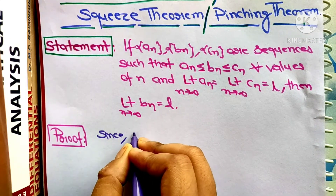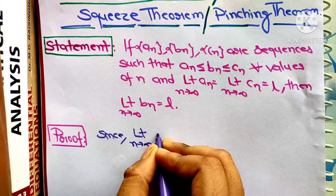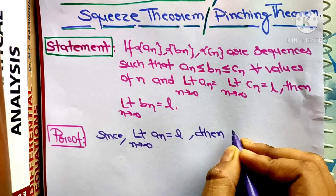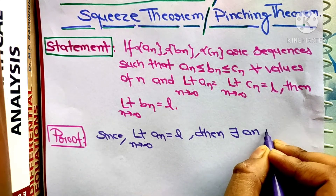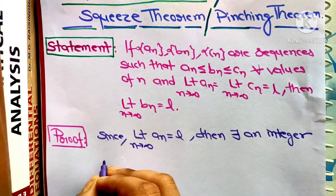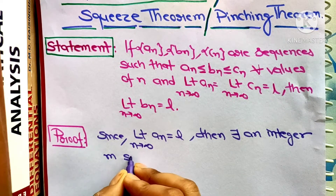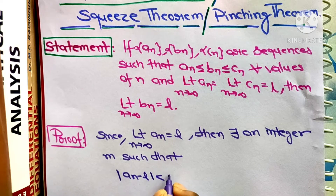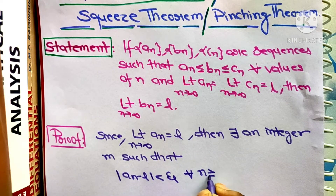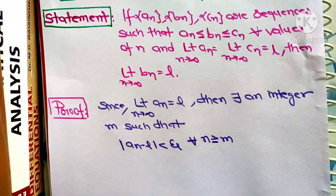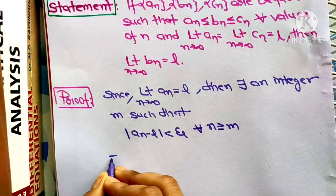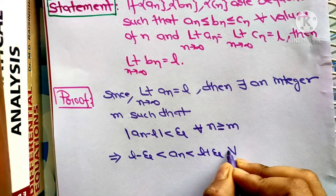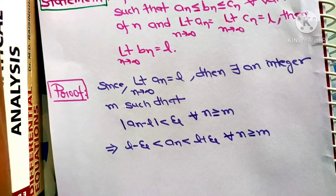Since the limit as n tends to infinity of aₙ equals l, by definition there exists a positive integer m such that |aₙ − l| < ε for all n ≥ m. We can rewrite this by breaking the modulus sign as: l − ε < aₙ < l + ε for all n ≥ m.